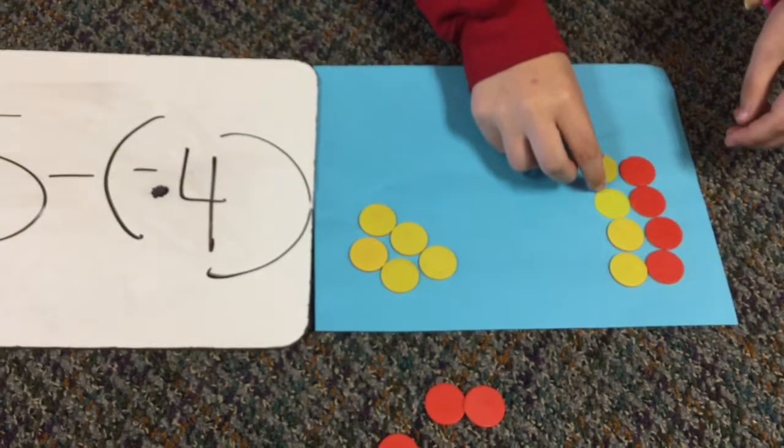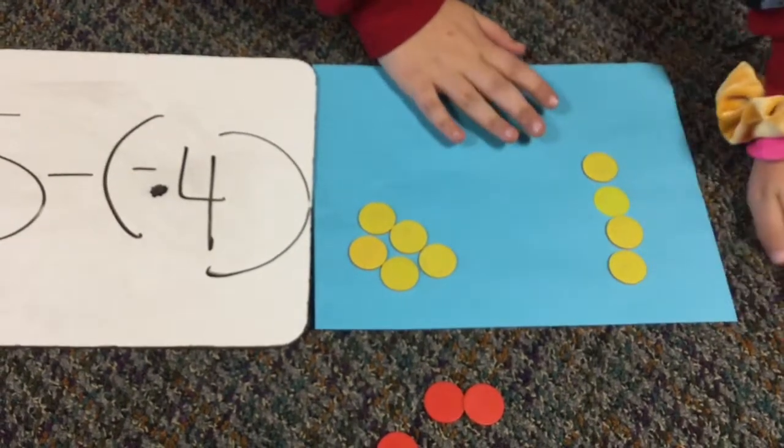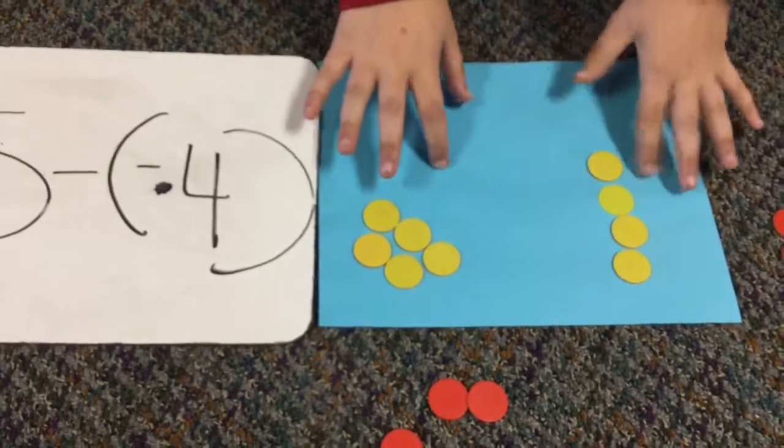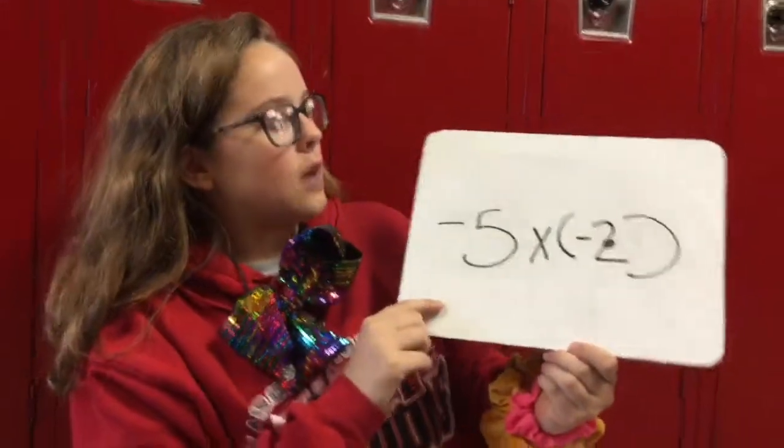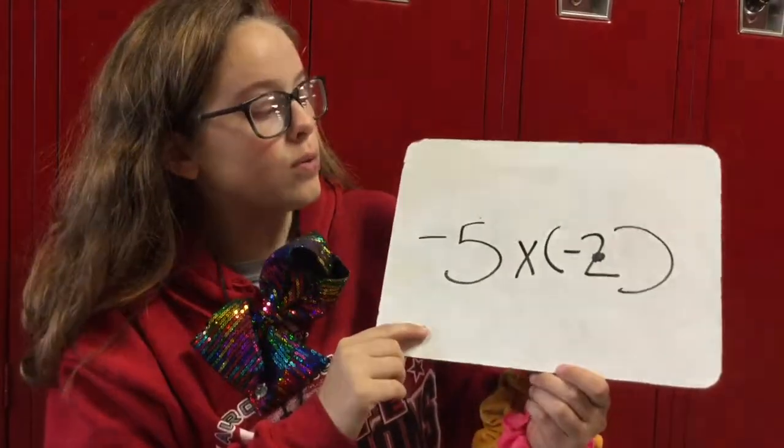And then for our answer, we have to take away all these negatives, and then our answer is 9. Last problem is take away 5 groups of negative 2.